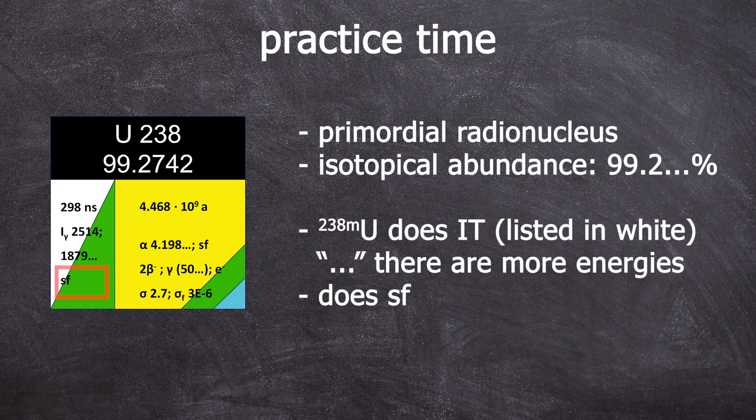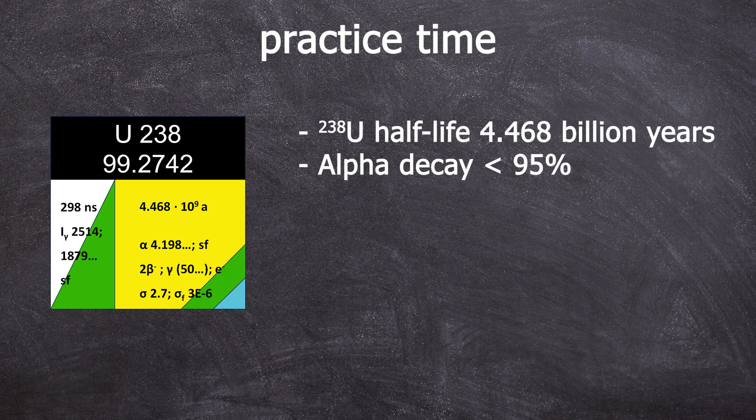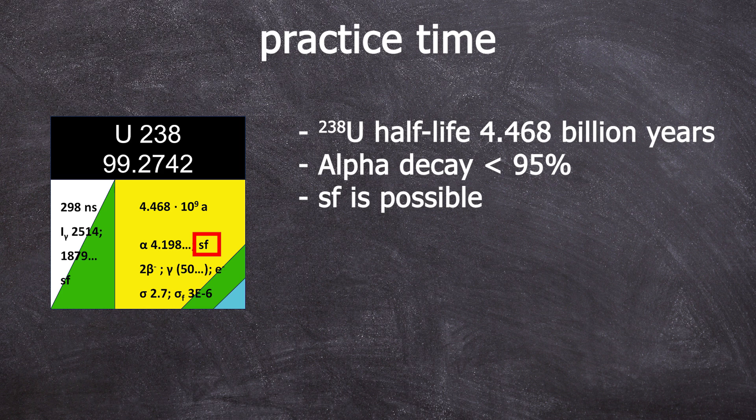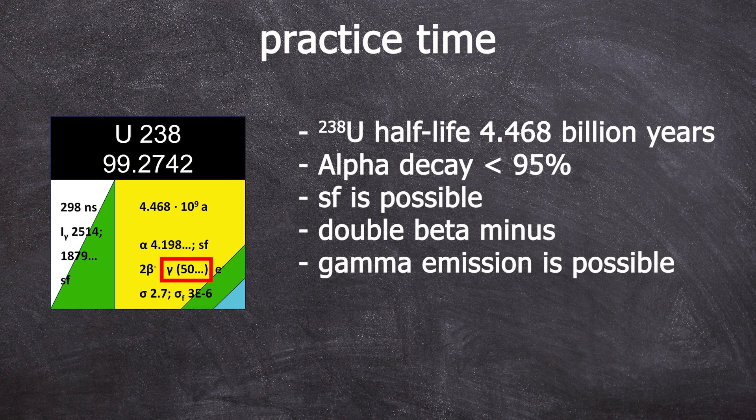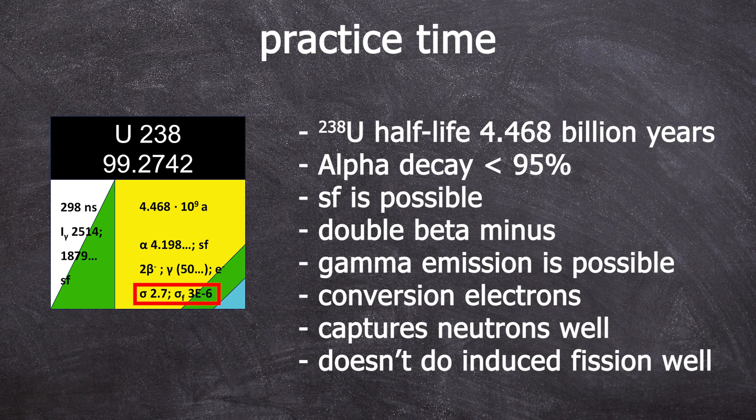Now onto uranium-238g. This has a half-life of 4.468 billion years, with a probability of up to 95% it decays via alpha emission emitting a 4.198 mega electron volt alpha particle. Other alpha energies are possible but have a probability of less than 1%. Spontaneous fission occurs with a probability of under 5%. There can be a double beta minus decay. The most common gamma line is the 50 kiloelectron volt line but even that has a probability of occurrence of less than 1%. Our newly learned conversion electrons can also be detected. The cross-section for an N-gamma reaction with thermal neutrons is 2.7 barn which is quite high as it is higher than 1. The cross-section for a neutron induced fission is with 3 times 10 to the power of minus 6 barns quite small.